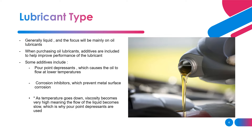The different types of lubricants are generally liquid, and we'll be focusing mainly on oil lubricants. When you purchase oil lubricants there are different additives included to help improve performance. Some additives include pour point depressants, which cause the oil to flow at a lower temperature, and corrosion inhibitors, which prevent metal surface corrosion. As temperature goes down, viscosity becomes very high, meaning the flow of the liquid becomes slow, which is why pour point depressants are used.